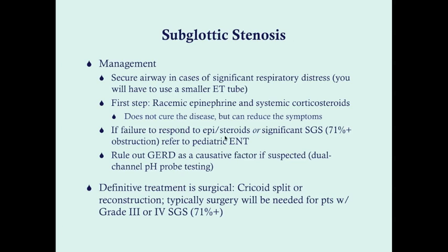If the patient does not respond to epinephrine and steroids, or has significant subglottic stenosis of grade 3 or 4 (71% or more obstruction), refer immediately to a pediatric ENT. Ultimately, all these patients should be referred to ENT. Rule out GERD as a causative factor — if GERD is causing the inflammatory response, treating it should resolve the stenosis. This is evaluated via dual-channel pH probe testing, where a gastroenterologist endoscopically places a probe at the inferior esophageal sphincter and another at the level of the subglottis.